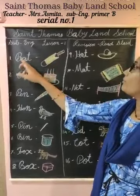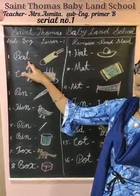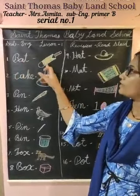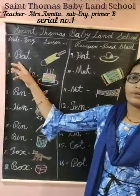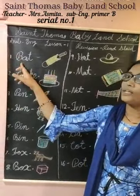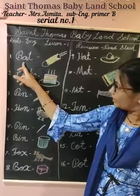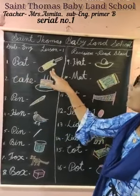B, A, T — bat. Now read with me: B, A, T — bat.